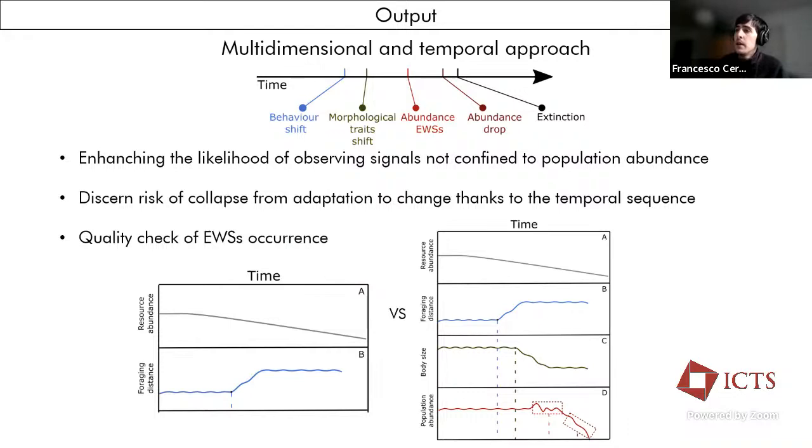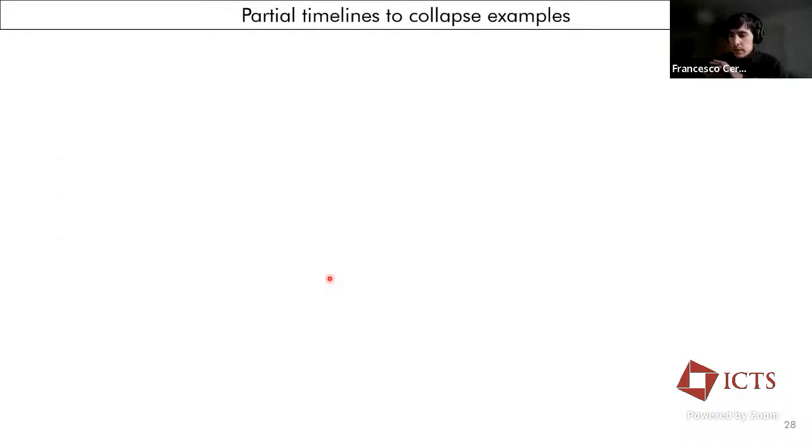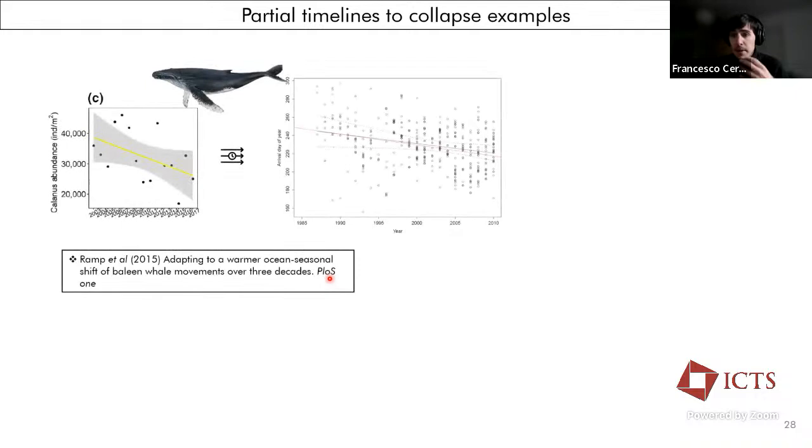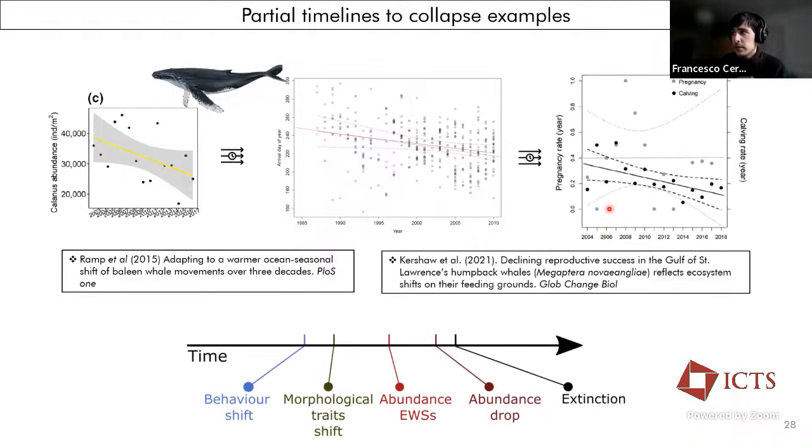Okay. Now, we don't have real life examples of an overall total timeline to collapse, but in the literature, we can find partial examples. Quickly on this one, for example, this study on humpback whales found that due to a decrease in the resources that the whales were feeding on, there was a behavioral shift, so a change in the spatial pattern. And after some years, a study on the same population found that the calving rate, so how many new calves were born and were surviving, was changing. And so we can see that this is like a partial timeline to collapse in which first a behavioral shift was observed by the first study, and then a life history trait shift was observed, and this can be put in the timeline before we can observe the increase in the variance of the population trend, which can trigger the abundance-based early warning signals, for example.